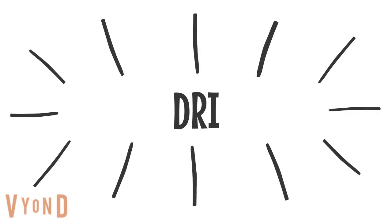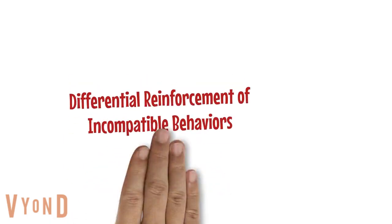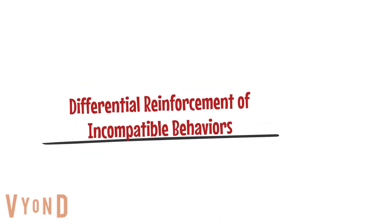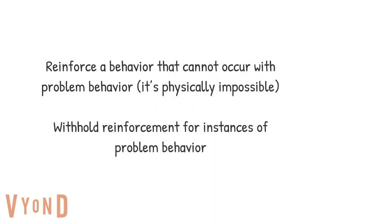The first type of differential reinforcement is DRI — differential reinforcement of incompatible behaviors. This means we reinforce a behavior that cannot occur at the same time as a problem behavior, as in it's physically impossible, and then we withhold reinforcement for the problem behavior.